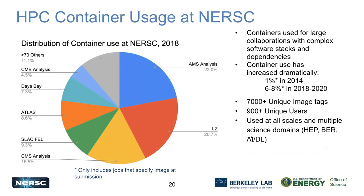A little about usage of containers at NERSC. This is a snapshot from 2018 — we're trying to generate one for this past year — but you can see a number of different applications that have run using containers. A lot come from high energy physics and experimental use cases. We've gone from containers being a very marginal amount in 2014 to over the past couple of years being in the 6 to 8% range, with thousands of different images pulled and run at NERSC and over 900 unique users who have used Shifter.